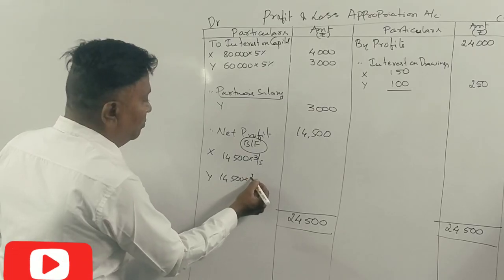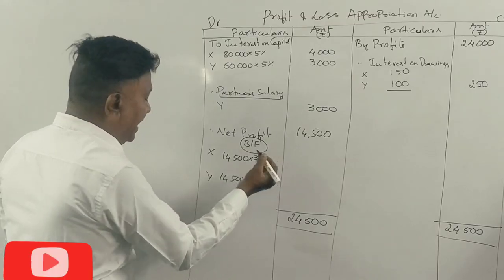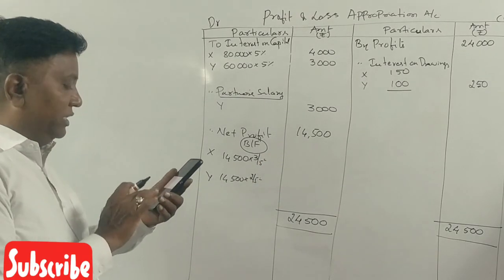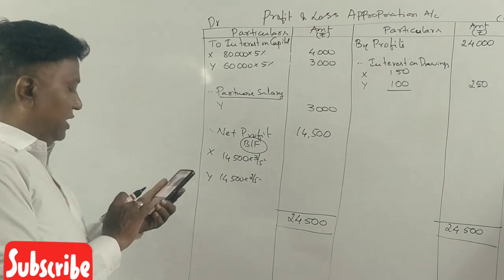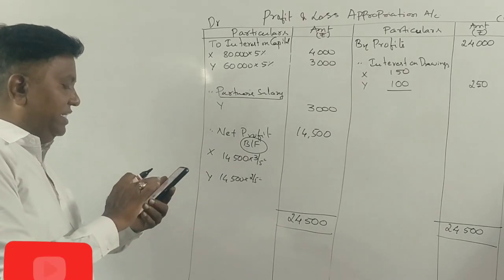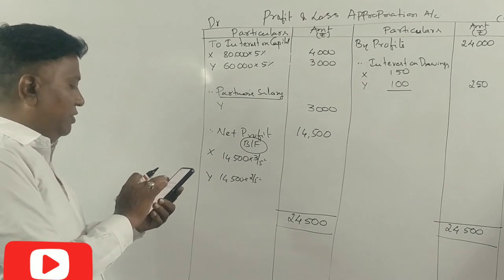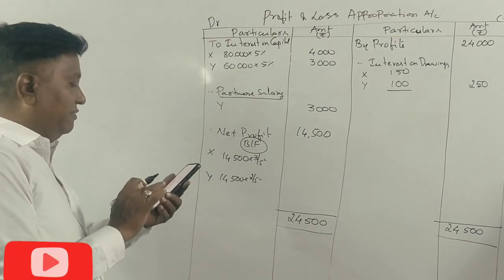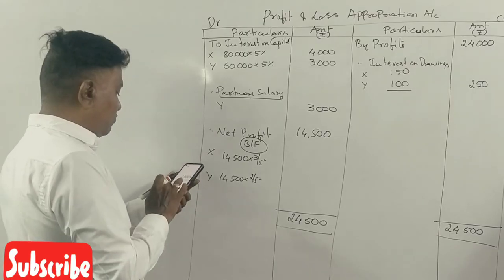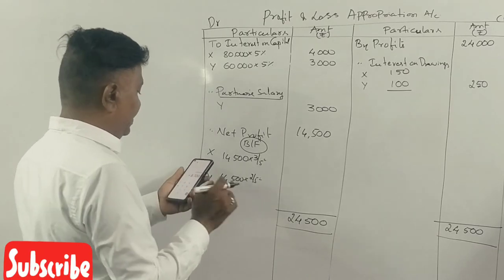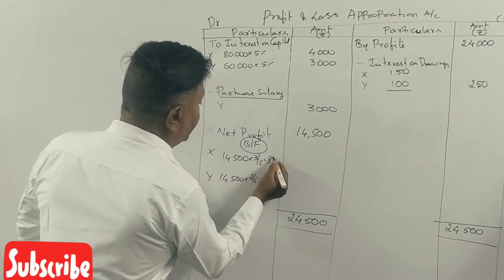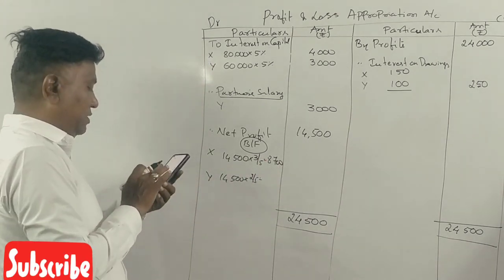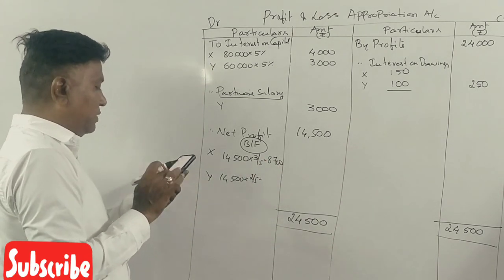Profit sharing ratio is 3 to 2. Dividing: 2 divided by 5, into 3 — giving 8,700 as the share.